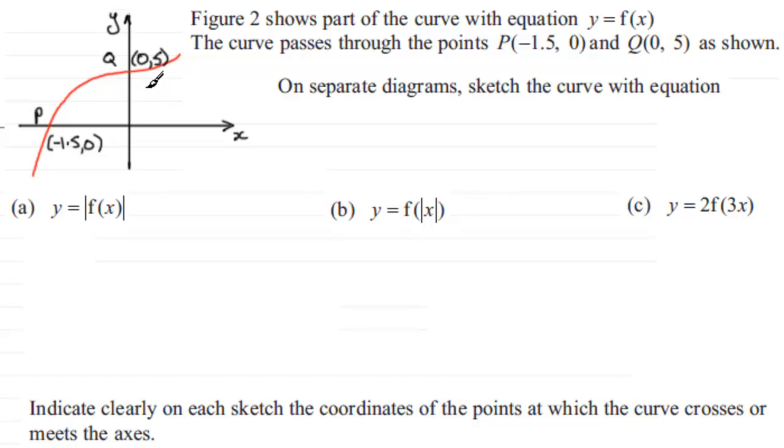and the point Q which has coordinates (0, 5). And on separate diagrams we've got to sketch the curve with equation in part a, y equals the mod of f of X, and in part b, y equals f of the mod of X, and then in part c, y equals 2f of 3x.